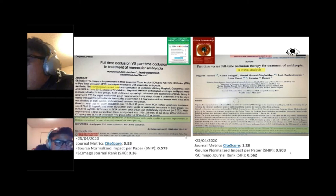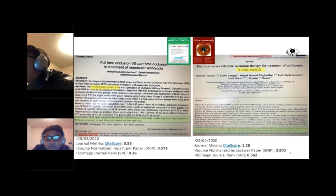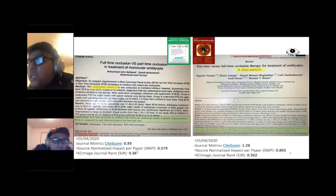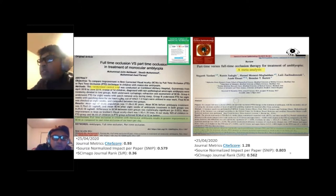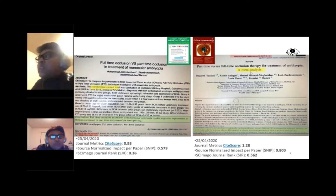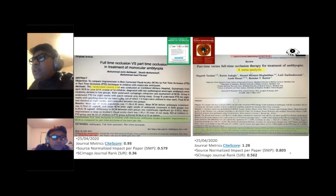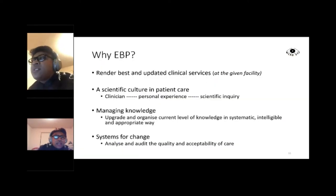Looking at journal metrics — impact factor, citation score, and SCImago journal rank — the right-hand paper from the Journal of Current Ophthalmology ranked slightly better than the left-hand paper from the Pakistan Journal of Medical Sciences. Also, meta-analysis is stronger evidence than a randomized controlled trial alone, so the right-hand paper carries more weight. This is how we decide which evidence to prefer.